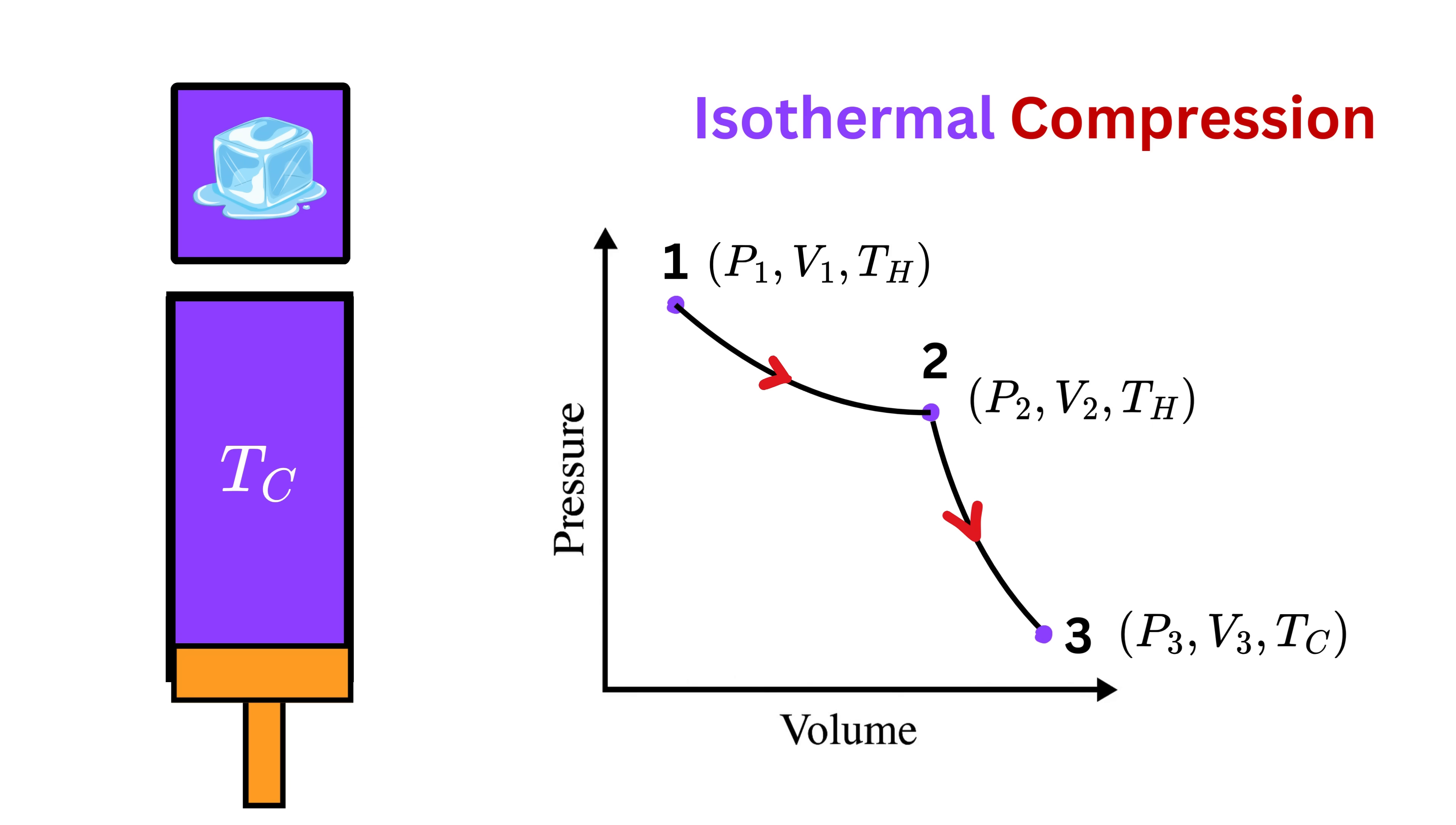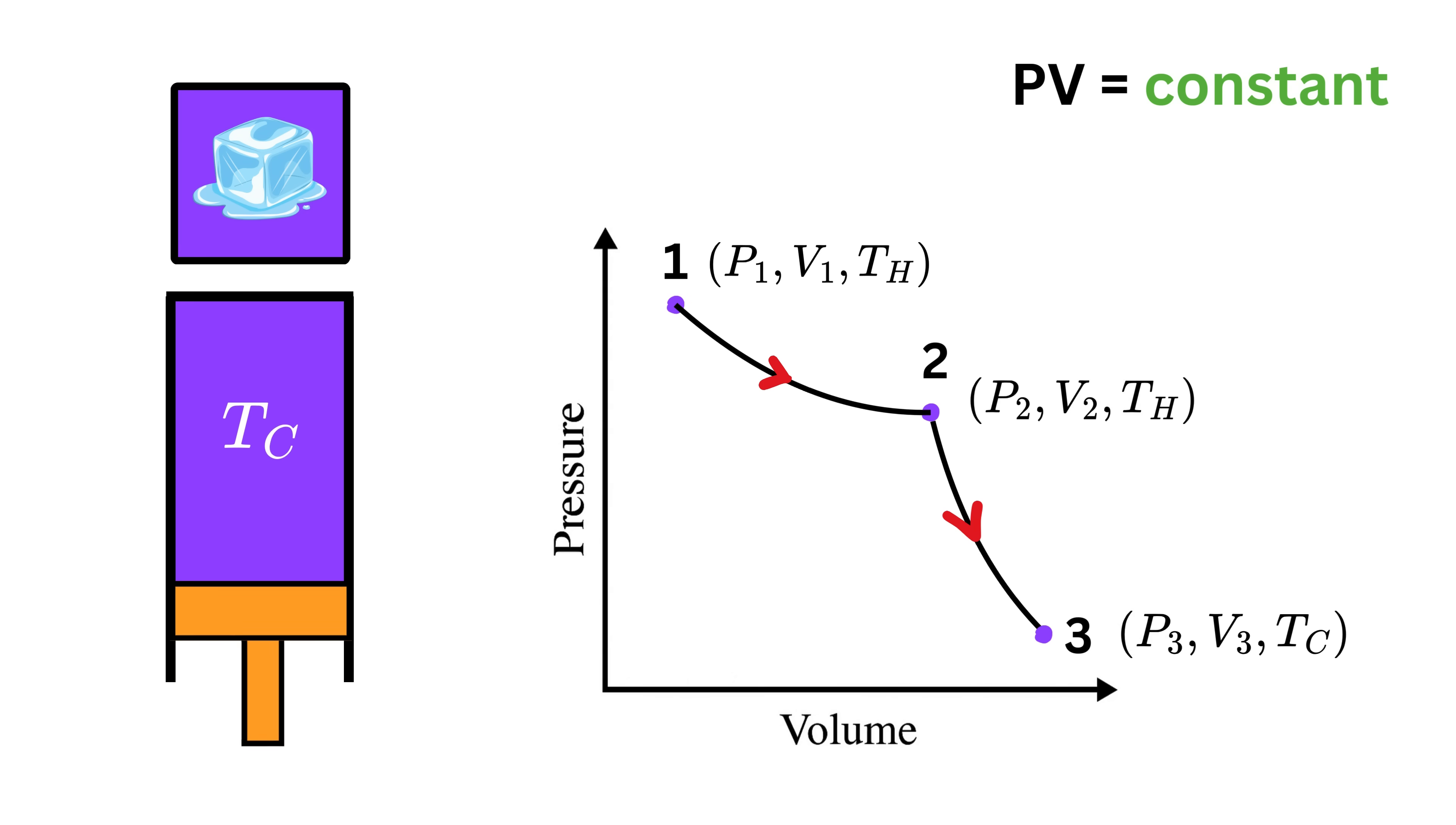Instead, it releases an equal amount of energy as heat to the cold reservoir, keeping nothing with it. Now let us see what this looks like on the pressure-volume graph. For isothermal processes, the rule is that P times V is constant. So as the volume decreases step by step from V3 to a smaller value V4, the pressure rises from P3 to a larger value P4 in such a way that the product of pressure and volume stays the same.